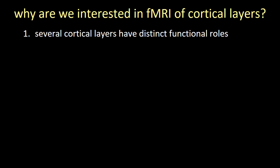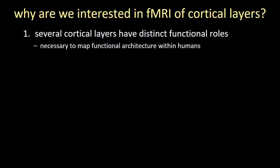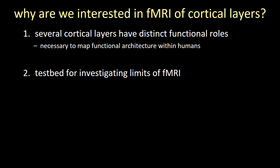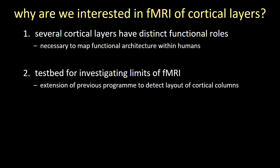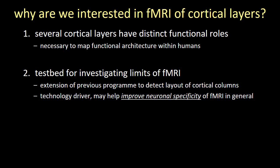So why are we interested in the fMRI of cortical layers? From animal studies, we know that several cortical layers have distinct functional roles, and therefore laminar fMRI is going to be necessary to map functional architecture within humans. This also provides a nice test bed for investigating the limits of fMRI, which appeals to engineers and physicists. It's an extension of work to understand the neural specificity of fMRI by detecting the layout of cortical columns, and it's also a technology driver — what's good for laminar fMRI is good for fMRI in general.